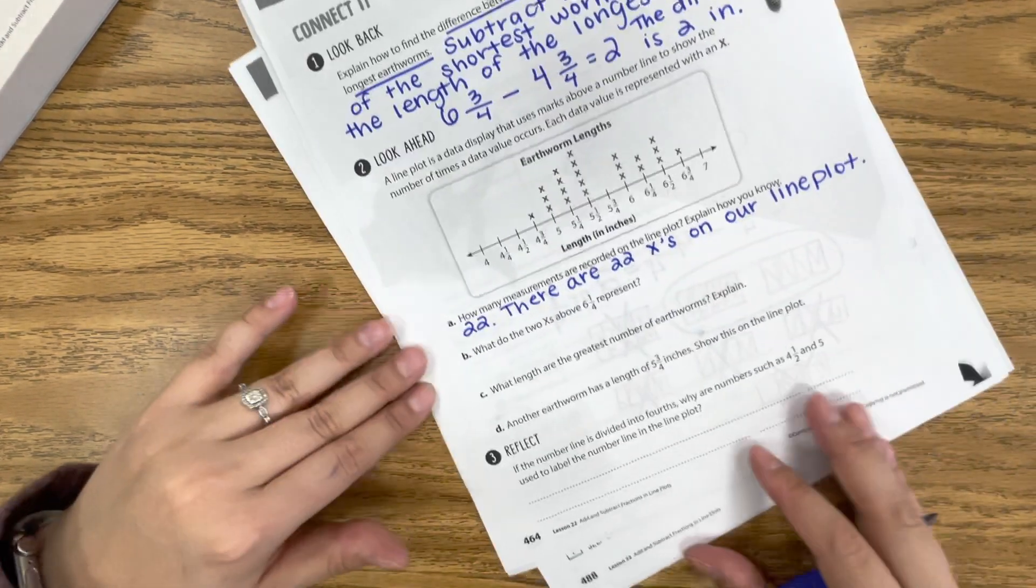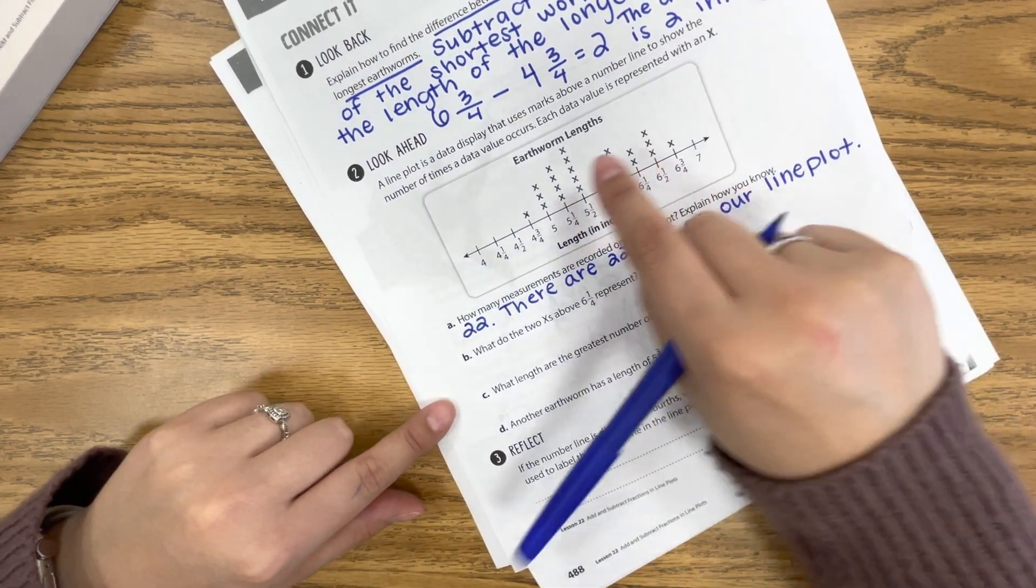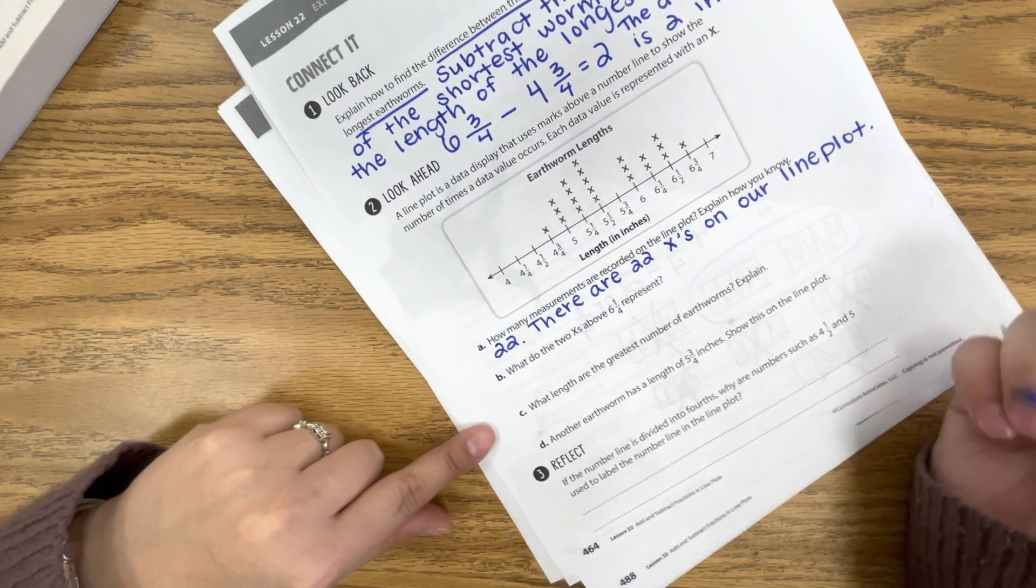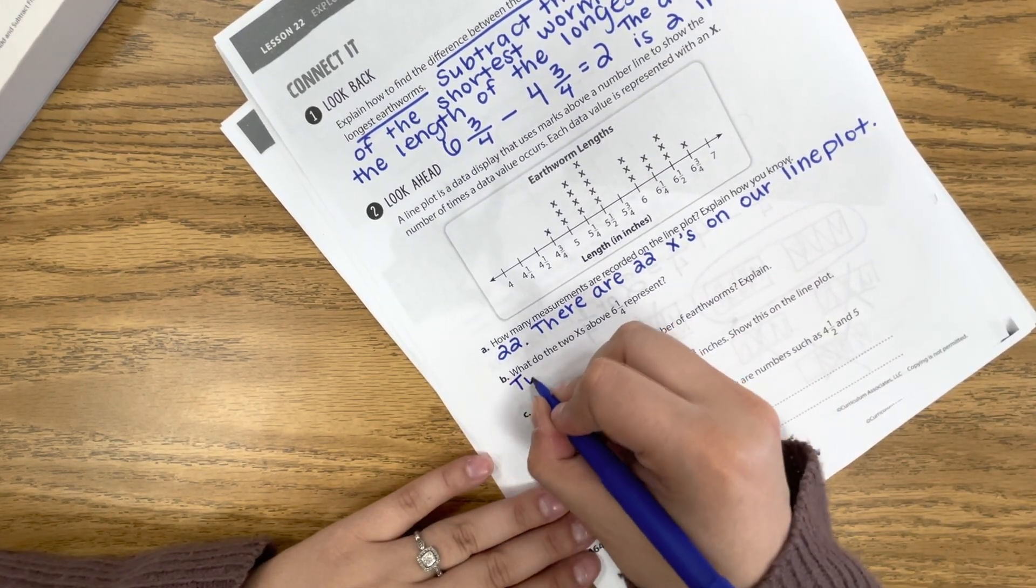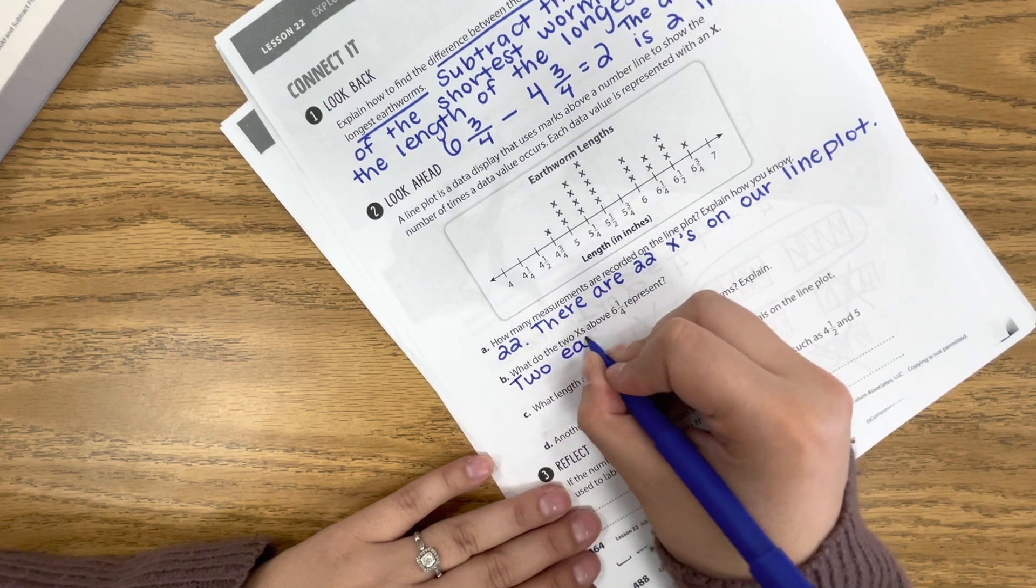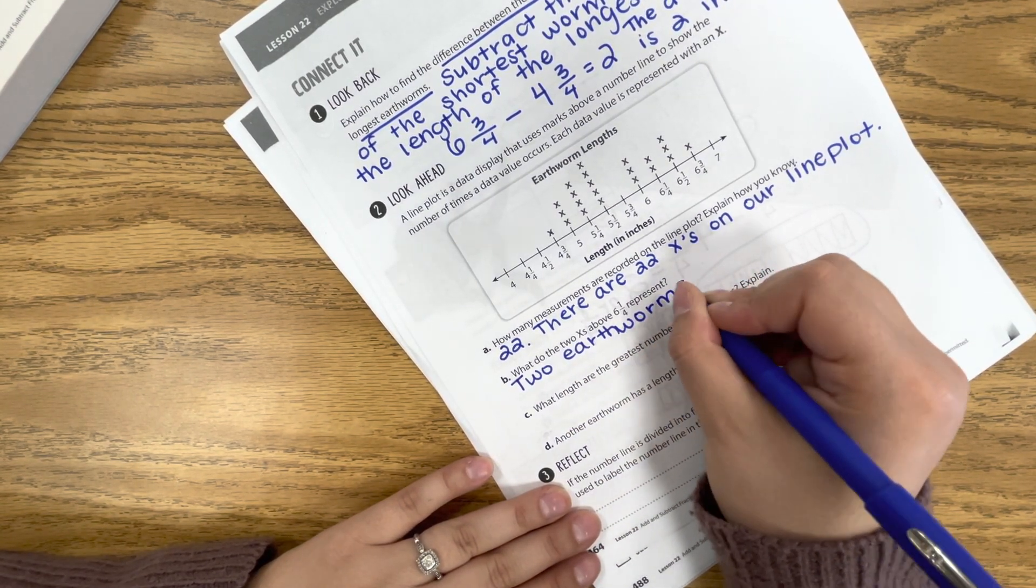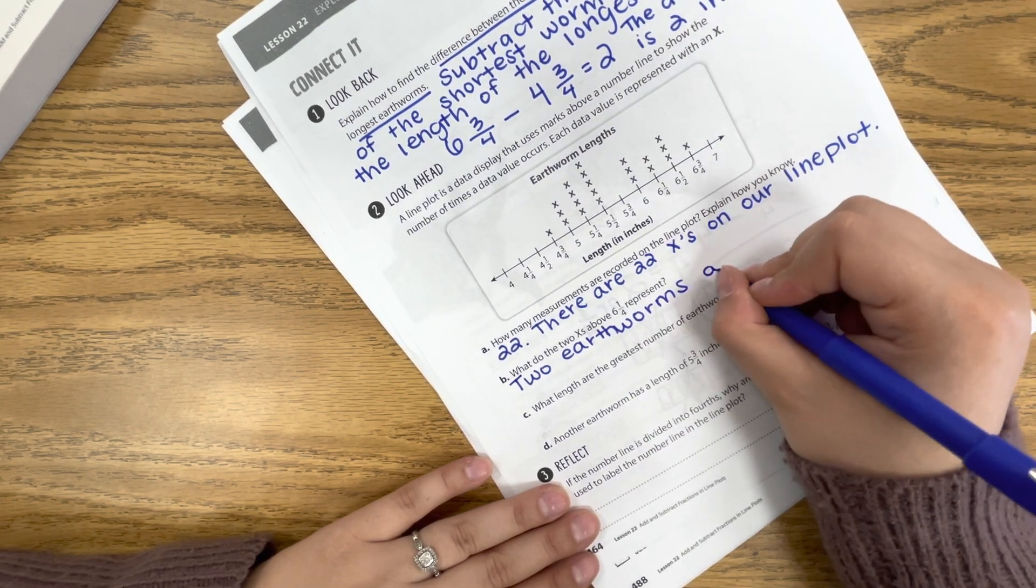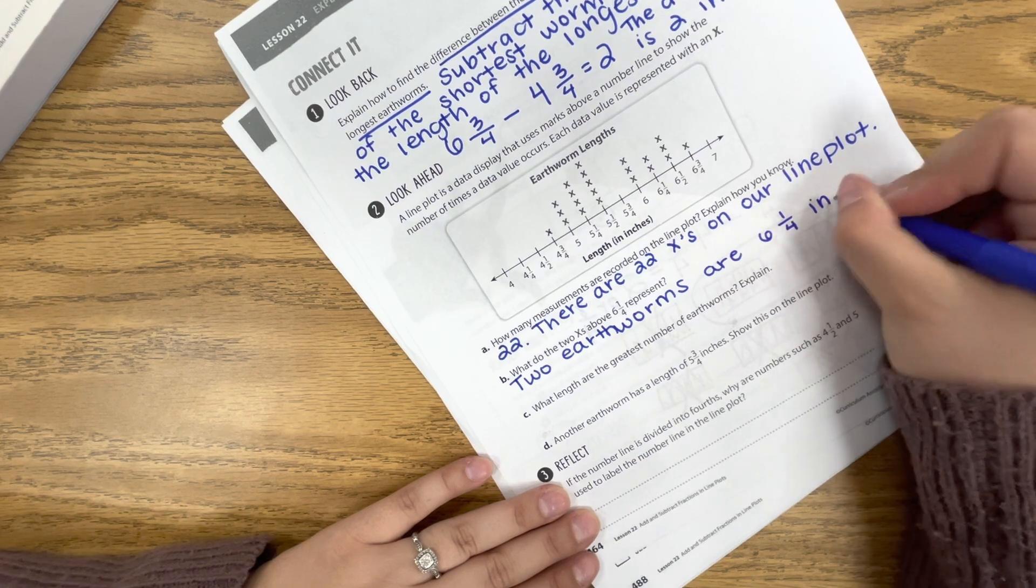So if we continue with that, what do the 2 X's above 6¼ represent? Well, since there's 2 here, that means there's 2 earthworms that have that length. So we can say 2 earthworms are 6¼ inches long.